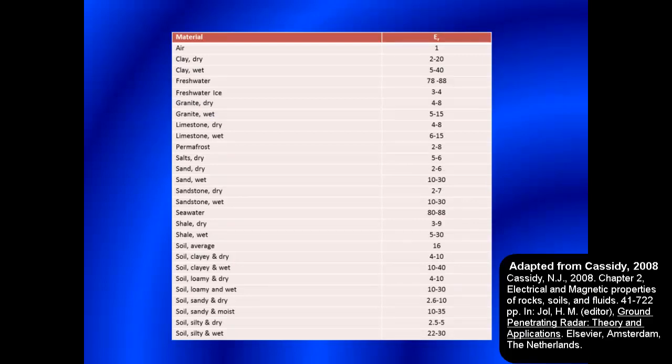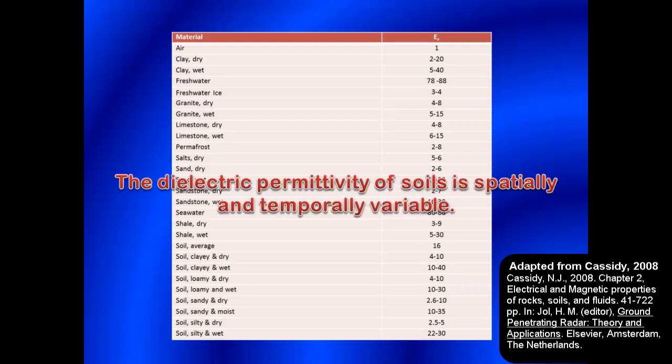Dielectric permittivity governs the velocity of propagation, and its contrast determines the amount of energy that is reflected back from a subsurface interface. The dielectric permittivity of soil materials is dependent on their moisture content. As shown in this table, values of dielectric permittivity range from 1 for air to 78 to 88 for water. The dielectric permittivity of dry mineral soil materials ranges from 2 to 10, while for wet mineral soil materials it ranges from 10 to 40. However, because of its dependence on moisture content, the dielectric permittivity of soils is spatially and temporally variable.